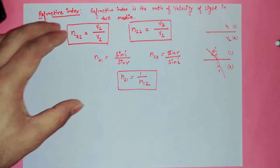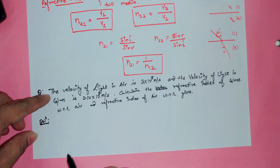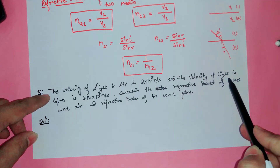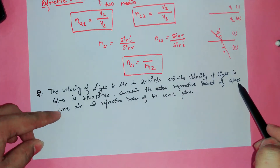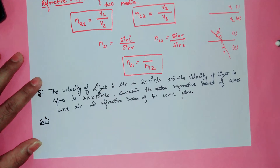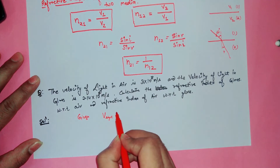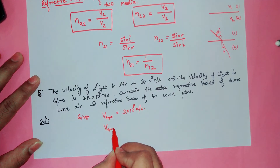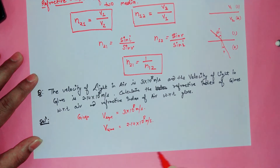Using these formulas we will do some numericals. Suppose the velocity of light in air is 3 × 10⁸ m/s and the velocity of light in glass is 2.14 × 10⁸ m/s. We have to calculate the refractive index of glass with respect to air and the refractive index of air with respect to glass. Given: velocity in air = 3 × 10⁸ m/s, velocity in glass = 2.14 × 10⁸ m/s.